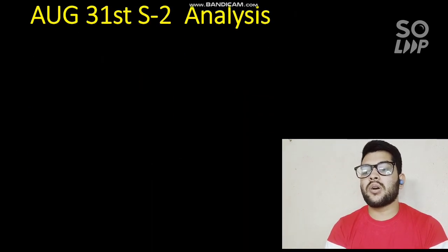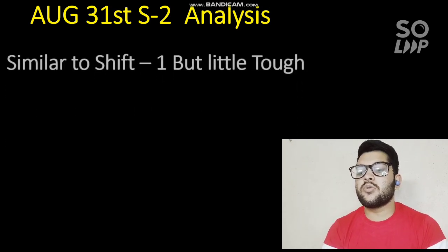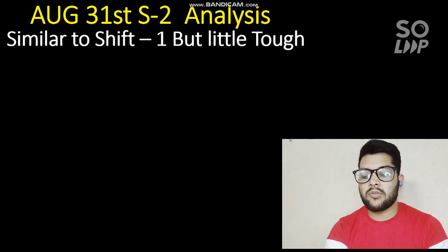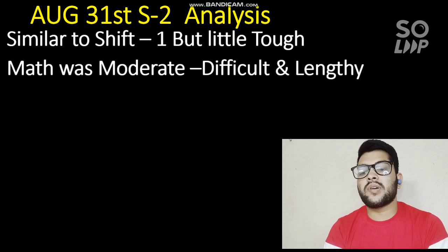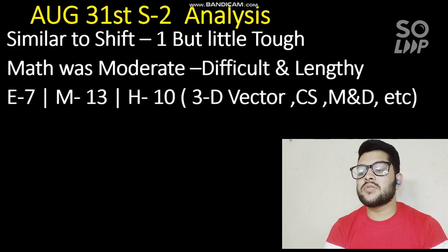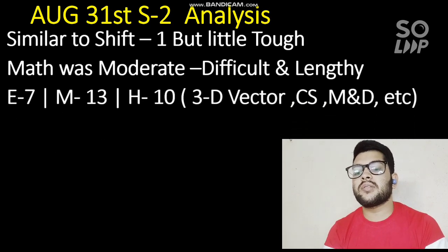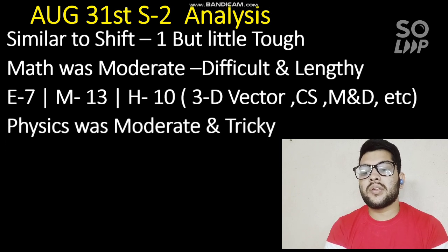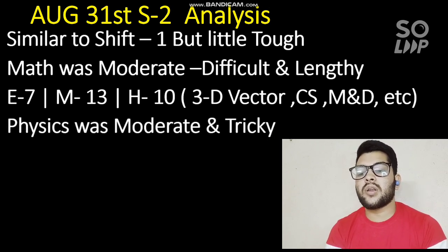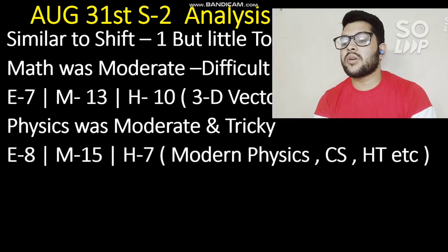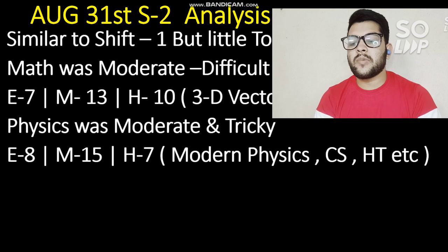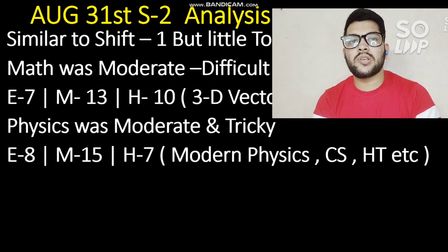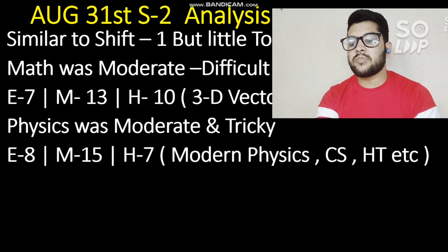For August 31st Shift 2: it is similar to Shift 1 but a little bit tougher. Math was moderate to difficult and lengthy — easy questions were 7, moderate 13, hard 10. Topics with multiple questions: 3D vectors, conic sections, matrices and determinants. Physics was moderate and tricky — easy questions 8, moderate 15, hard 7. Modern physics again had the most questions, along with heat and thermodynamics, semiconductors, and logic gates.